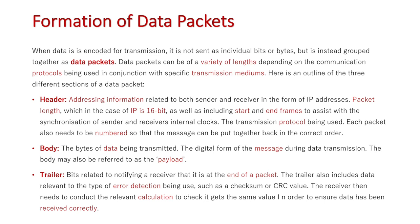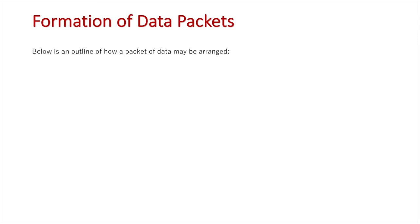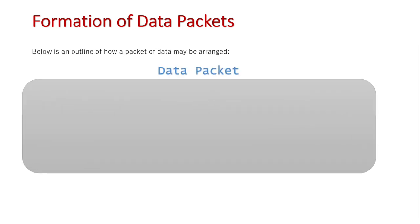Those are the three sections in the formation of data packets. Let's now illustrate that — below is how a packet may be arranged. Here is the data packet, currently empty, but we're going to start filling it in. Firstly is the header: we're going to be using a specific transmission protocol, which in this case is IP.